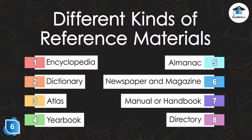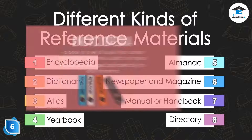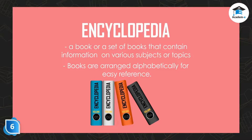Let us study them one by one. First is the encyclopedia. An encyclopedia is a book or a set of books that contain information on various subjects or topics. It provides easy access to reliable information. Encyclopedias come in volumes and are arranged alphabetically.